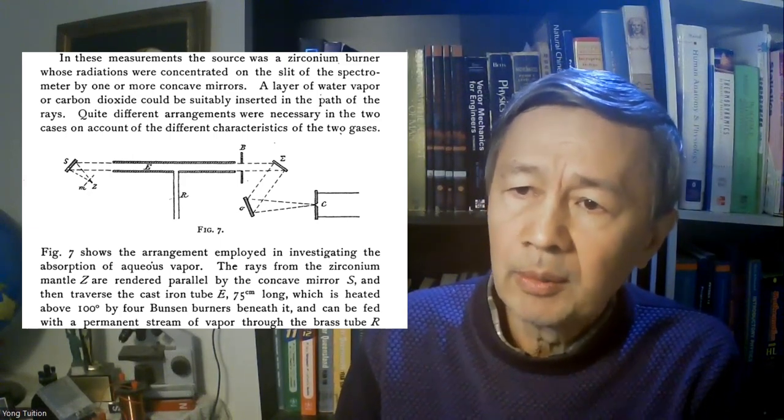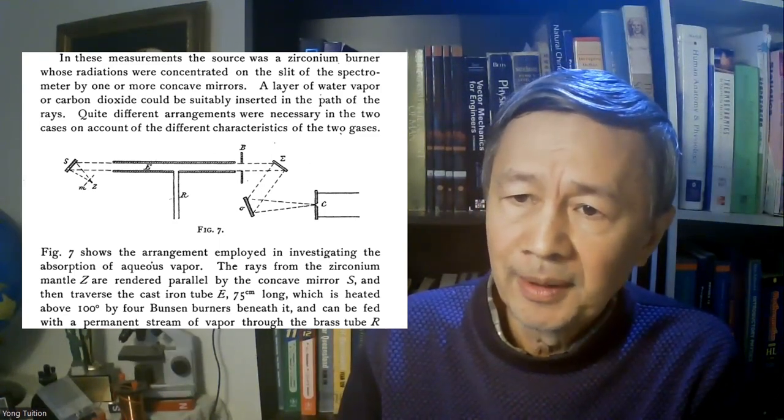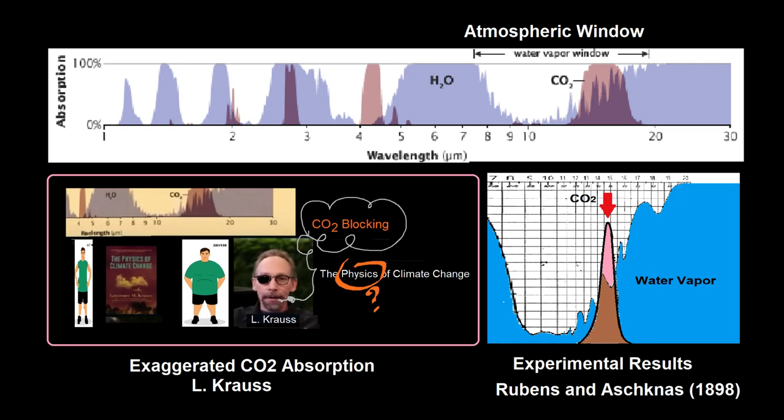By reading the original paper, I realized that the two spectra were separately measured, and the relative concentrations were not specified. This is understandable — in those days, the instrument was almost as simple as that used by Isaac Newton. By comparing the earliest spectra with the current graphical illustration of the atmospheric window, it is clear that the proportion of the CO2 absorption near 15 microns is noticeably exaggerated by today's climate scientists.